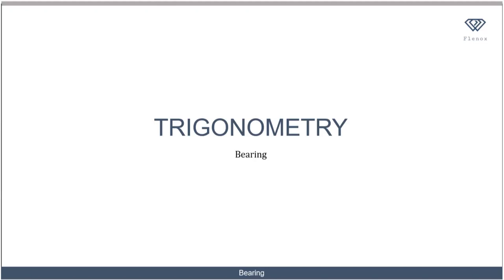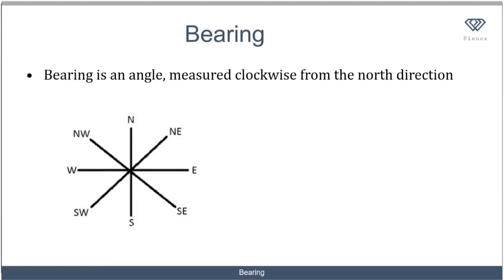Let's look at bearing. Bearing is an angle measured clockwise from the north direction. If you remember our discussion from longitude and latitude, we talked about the four cardinal points: north, south, west, and east. The section between the north and the east is called the northeast, between the south and east is the southeast, between the south and west is the southwest, and between north and west is the northwest.